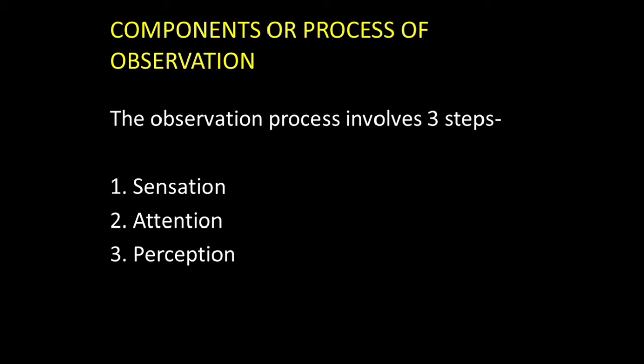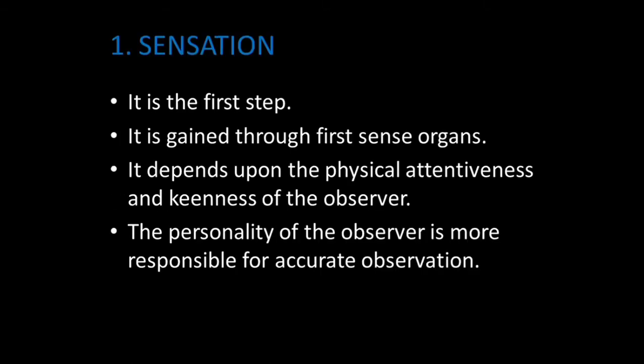Today we cover the components or process of observation. The first step is sensation — it is gained through the sense organs. It depends upon the observer, upon the physical attentiveness and keenness of the observer. That is, the observer's physical and mental presence. The personality of the observer is more responsible for accurate observation, and that is why it leads to reliable observation.